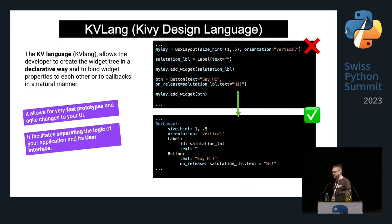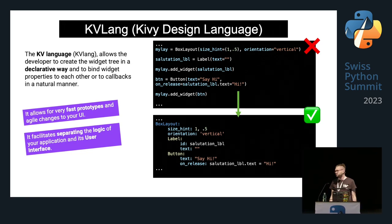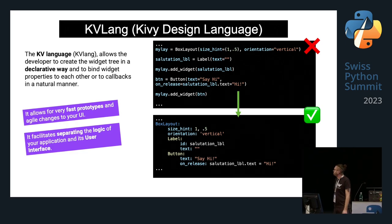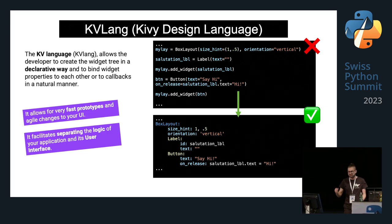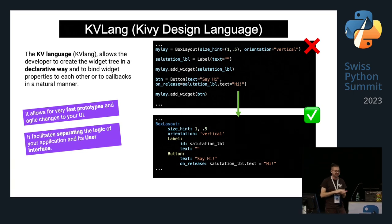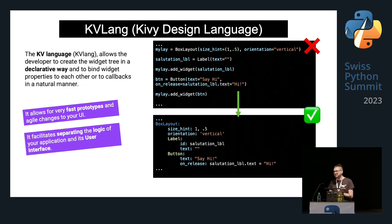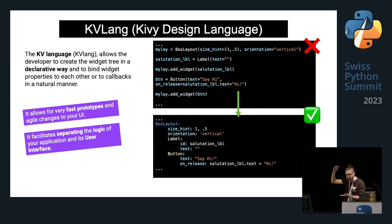Kiwi Language allows developers to create a widget tree in a declarative way and to bind widget properties to each other in a natural manner. You can create Kivy widgets in Python, but please avoid it unless you know what you're doing. Use Kiwi Language to describe your UI — it allows very fast prototyping, easy UI changes, and facilitates separating application logic from the user interface.